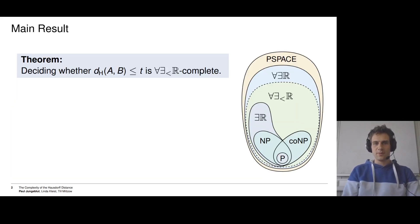So what is our main result? Our main theorem states that deciding whether the Hausdorff distance between A and B is at most t is complete for the complexity class strict ∀∃ℝ. I think that this complexity class is not very well known yet, so let us look where it lies in the hierarchy of known and studied complexity classes.